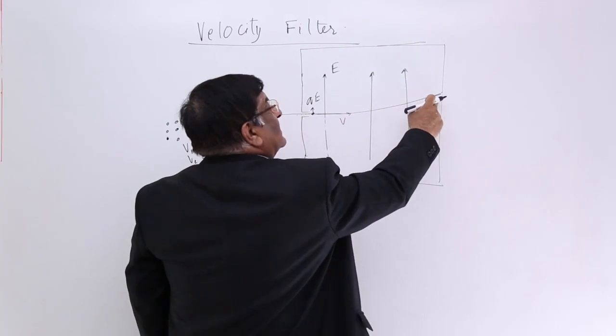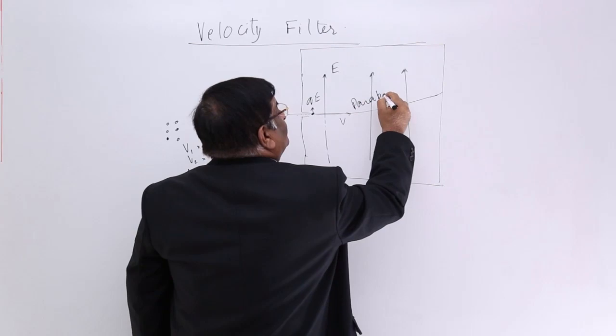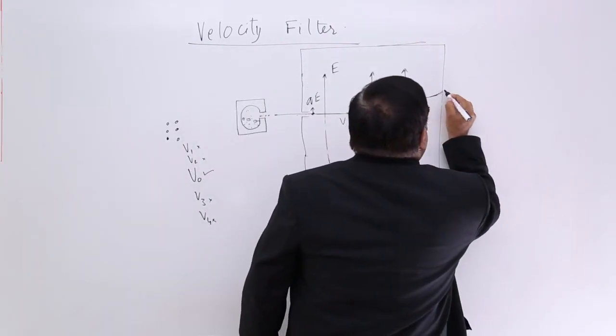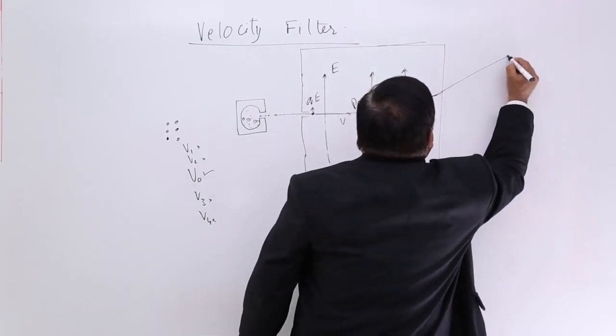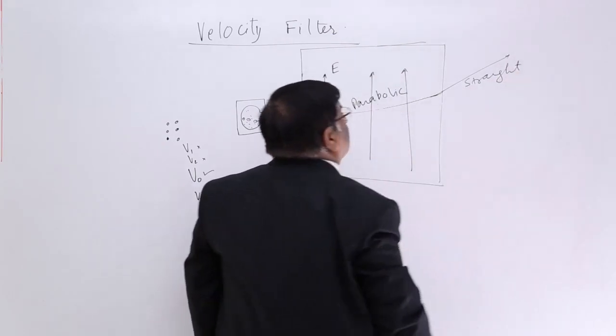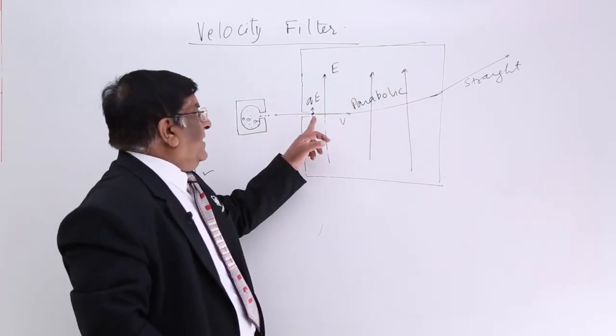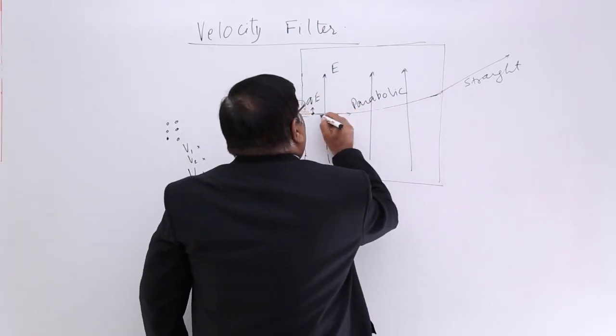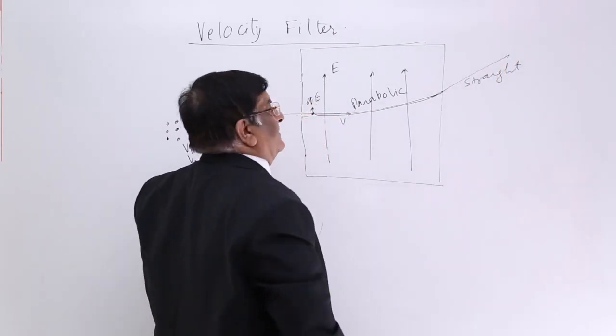and go like this, it will strike. So up to this, how will be the path? This will be a parabolic path, and when it reaches here, after that electric field is over and from here it will go straight.